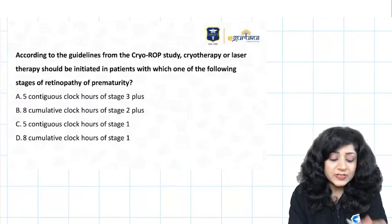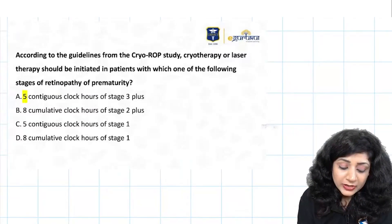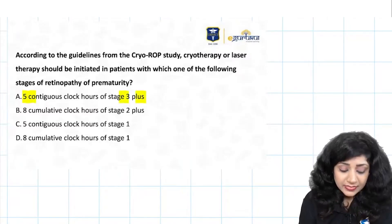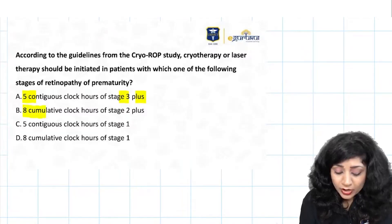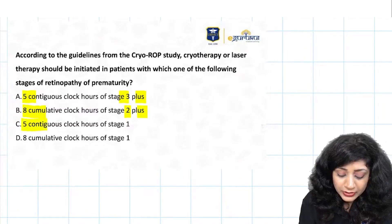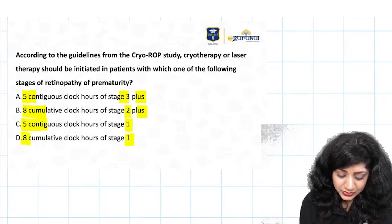Your options are: 5 contiguous clock hours of stage 3 plus, 8 cumulative clock hours stage 2 plus, 5 contiguous hours of stage 1, or 8 cumulative stage 1.